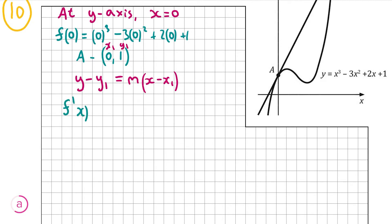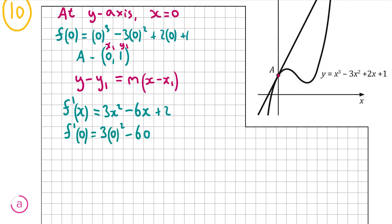Differentiating f(x): differentiating x³ gives 3x², differentiating -3x² gives -6x, and differentiating 2x gives 2. So f'(x) = 3x² - 6x + 2. Now I substitute x = 0 to find the slope at point A: f'(0) = 3(0²) - 6(0) + 2 = 2. So the slope m = 2.